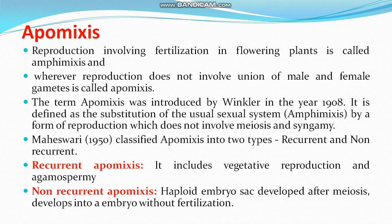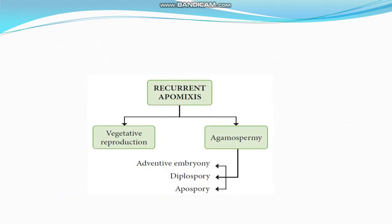In apomixis, meiosis and syngamy are totally absent. Maheshwari (1950) classified apomixis into two types: recurrent and non-recurrent. Recurrent apomixis includes vegetative reproduction and agamospermy. Non-recurrent apomixis applies when an embryo sac developed after meiosis develops into an embryo without fertilization. Recurrent apomixis is classified into two types: vegetative reproduction and agamospermy.